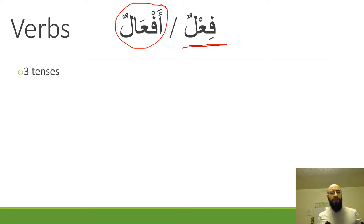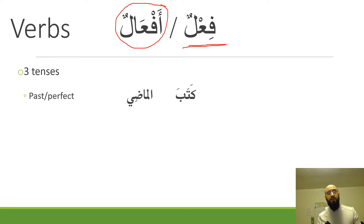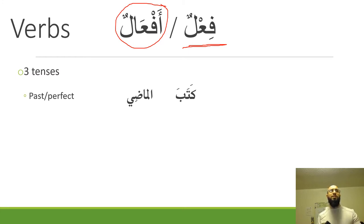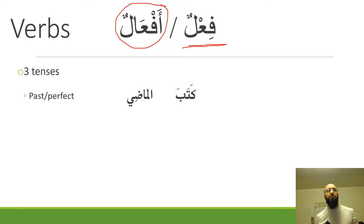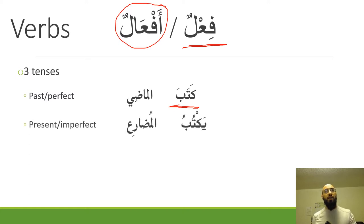Verbs in Arabic have two or three tenses, depending on who you ask. The first is the past or perfect tense, which in Arabic is called the madi tense. It's called perfect tense in English because it describes an action that has been completely finished. An example in Arabic is ketaba, which means 'he wrote.'